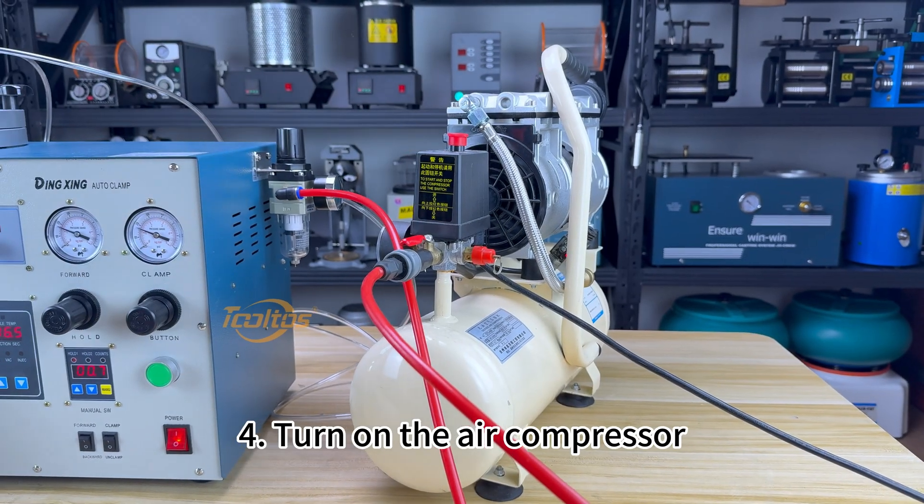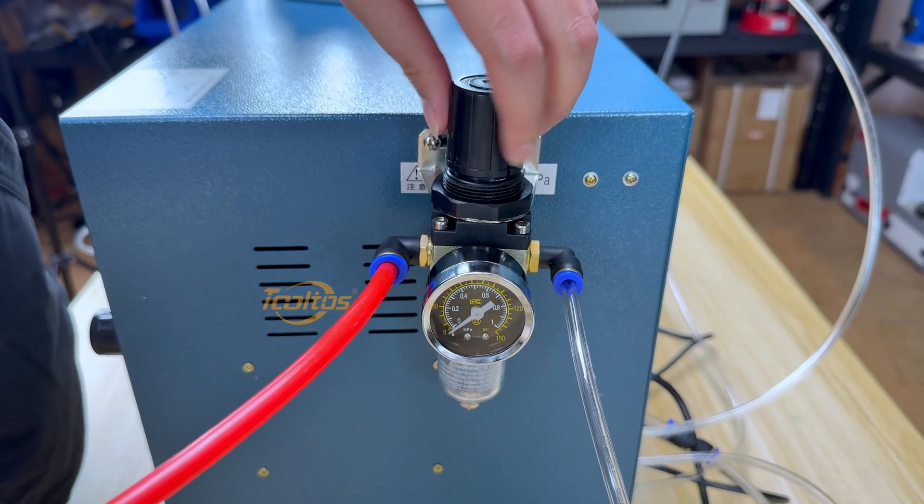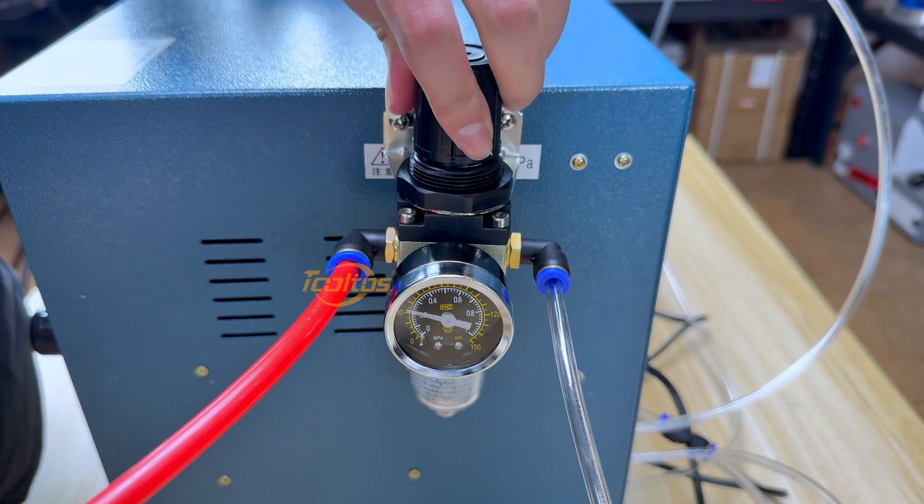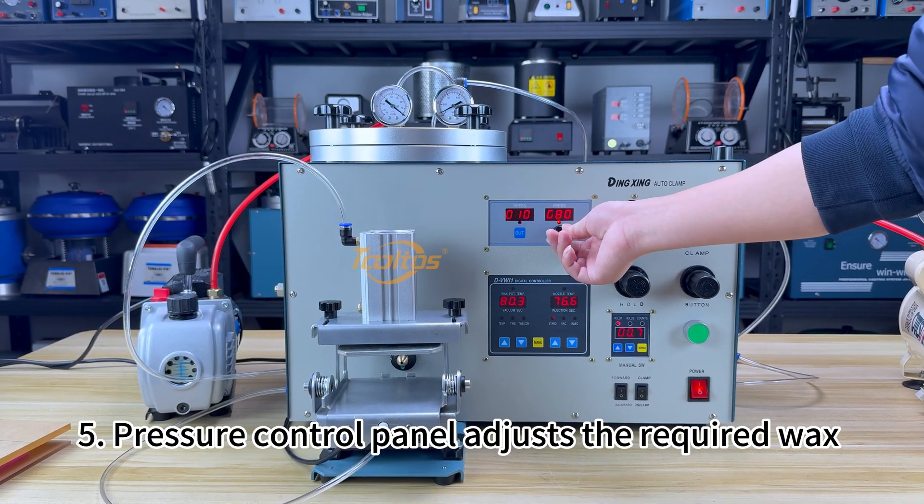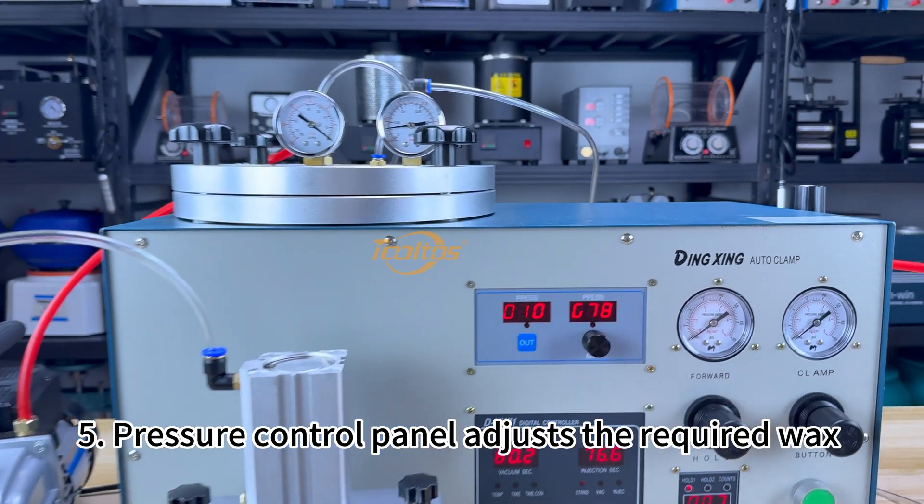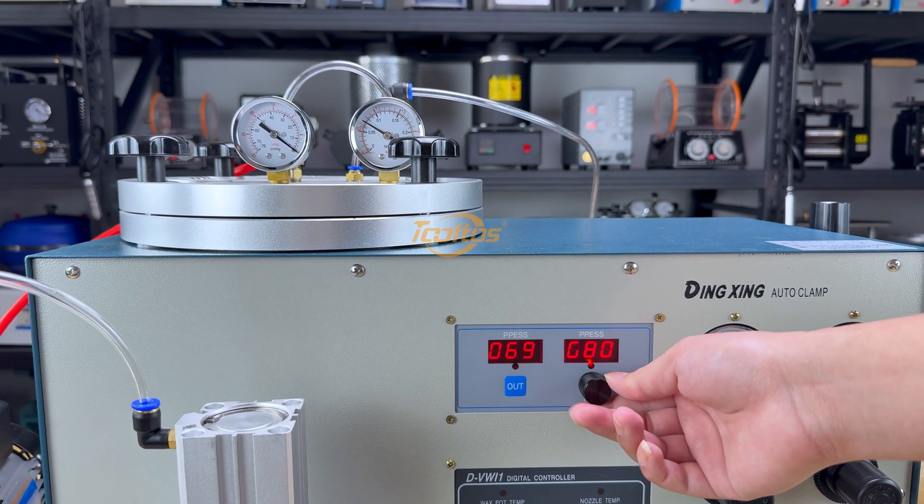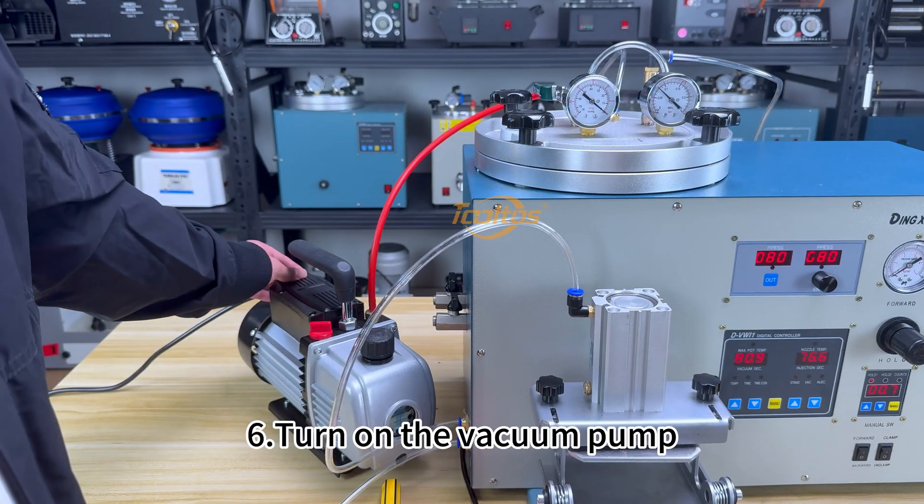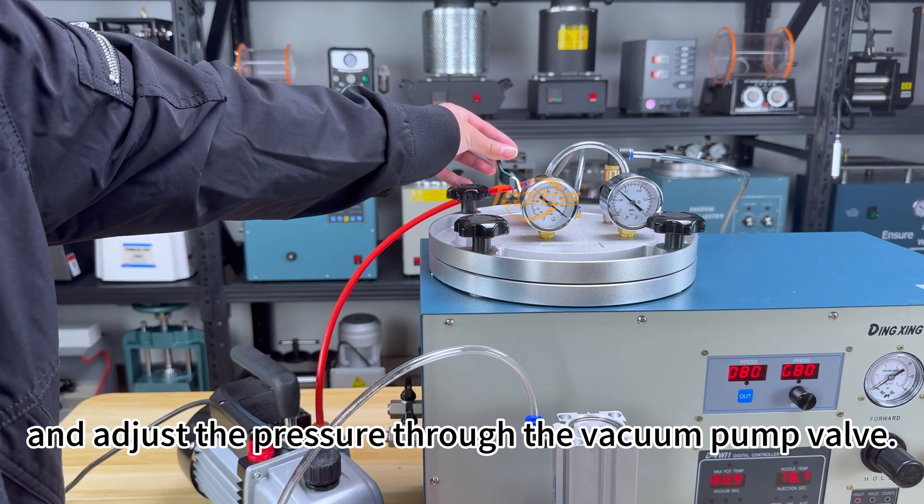4. Turn on the air compressor and adjust the supply pressure with the pressure gauge. 5. Using the pressure control panel, adjust the required wax cylinder pressure. 6. Turn on the vacuum pump and adjust the pressure through the vacuum pump valve.